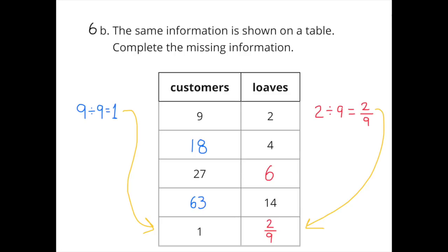For eighteen customers, I doubled the nine: nine times two equals eighteen, and two times two equals four loaves. For twenty-seven customers, I multiplied nine by three to get twenty-seven, and two times three equals six loaves. For sixty-three customers, nine times seven equals sixty-three, and two times seven equals fourteen — so there would be fourteen loaves of bread.